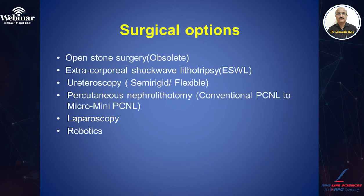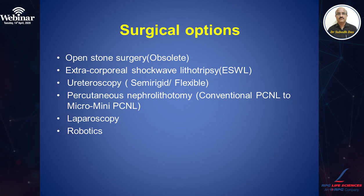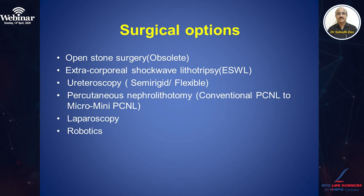The ancient method was open stone surgery, which has become almost obsolete nowadays. Current surgical options include extracorporeal shockwave lithotripsy, ureteroscopy through semi-rigid or flexible ureteroscopes, percutaneous nephrolithotomy which can be conventional PCNL or micro/mini PCNL, laparoscopic approach, and most recently, robotic-assisted treatment for renal stone disease.